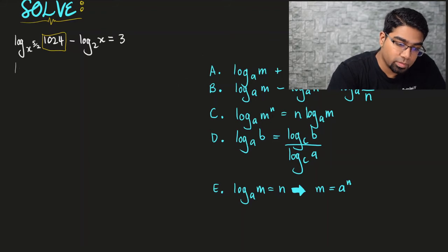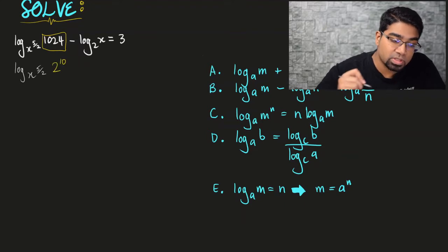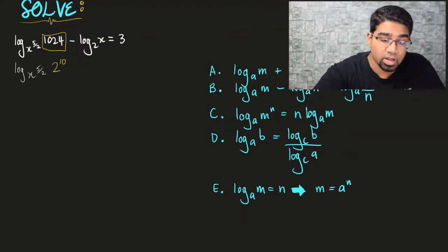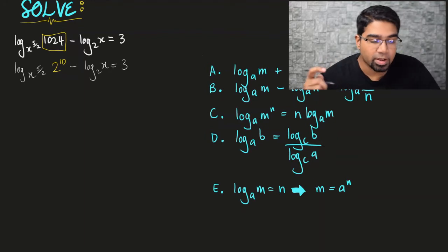So let's rewrite the expression. We have log base x to the power 5 over 2, and now 1024 is written as 2 to the power of 10. Minus log₂x — we are not changing anything else, just doing one thing at a time.